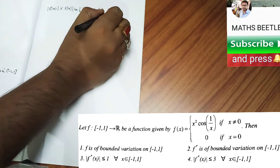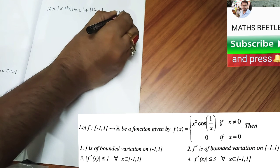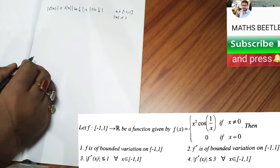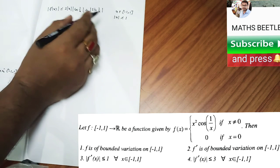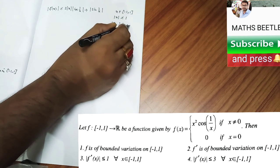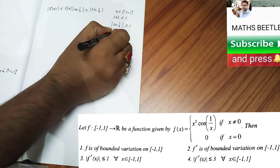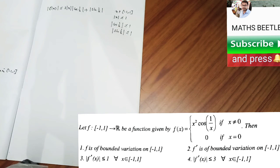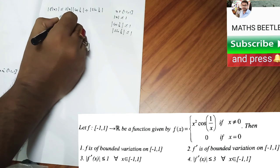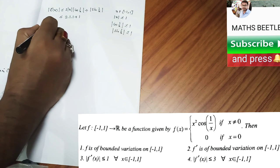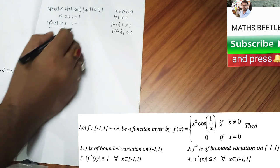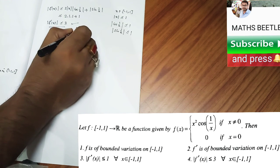Since x belongs to [-1, 1], we have |x| ≤ 1. We also know |cos(1/x)| ≤ 1 and |sin(1/x)| ≤ 1. Applying all these facts, we get |f'(x)| ≤ 2·1·1 + 1 = 3. So |f'(x)| ≤ 3 for all x in that interval.